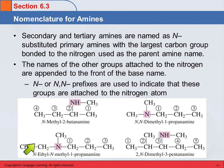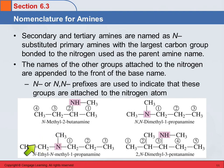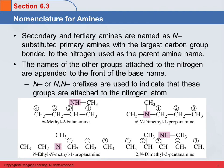This next example has an ethyl group, a methyl group, and a propyl group. The propyl group wins — it's bigger. So this is named 1-propanamine, and we name the others as substituents: methyl and ethyl. Ethyl comes first alphabetically, so it's N-ethyl, N-methyl-1-propanamine. We treat these capital Ns as if they were numbers, separating them from each other with commas and from other letters with dashes.